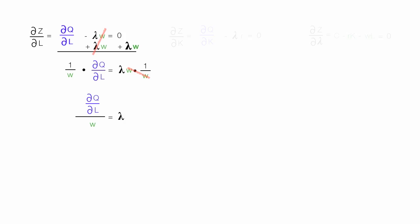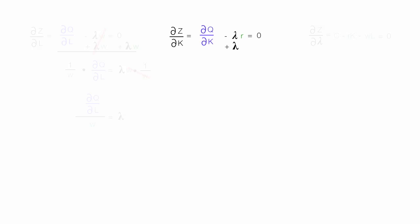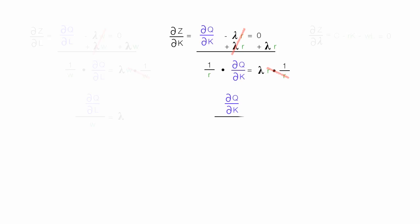Now I work on the second equation. I add lambda times R to both sides so those terms cancel out, leaving me with: the partial derivative of Q with respect to K equals lambda R. Then I multiply both sides by 1 divided by R so the R's cancel, giving me: the partial derivative of Q with respect to K divided by R equals lambda.